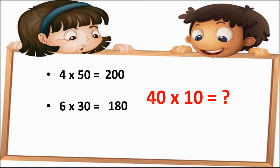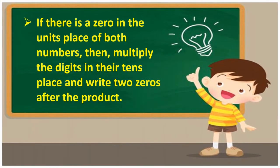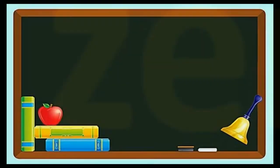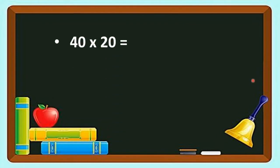Now students, 40 multiplied by 10. Now what are we going to do for this? If there is a 0 in the units place of both the numbers, then multiply the digits in their tens place and write 2 zeros after the product. So as you can see, 40 into 20: we are going to multiply 4 and 2. So 4 twos are 8, and we put these two zeros after 8. So the product will be 800.